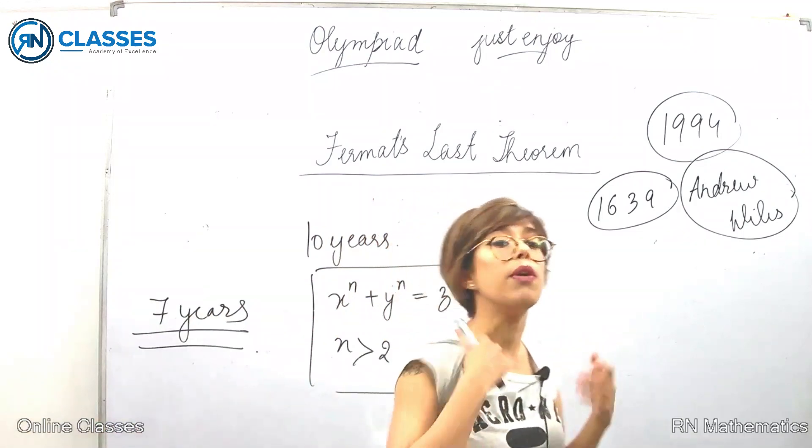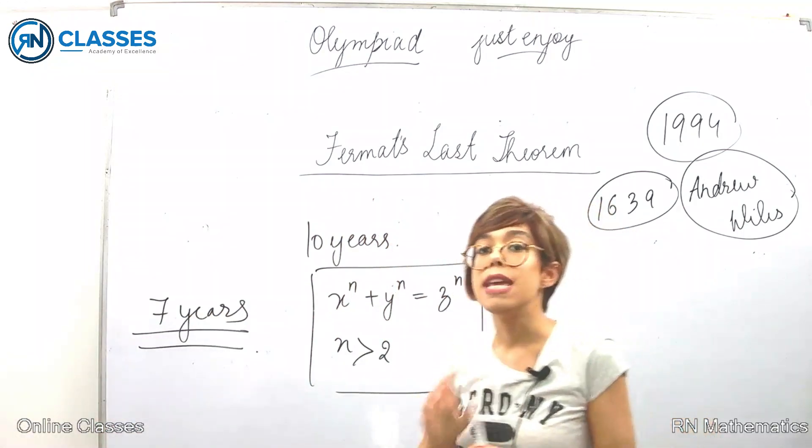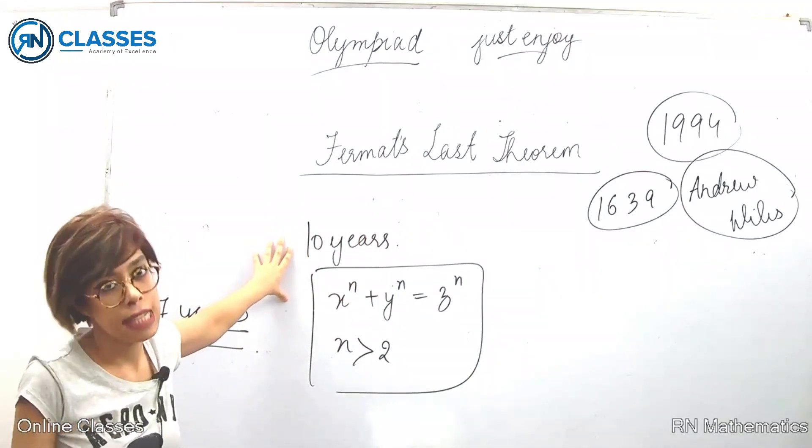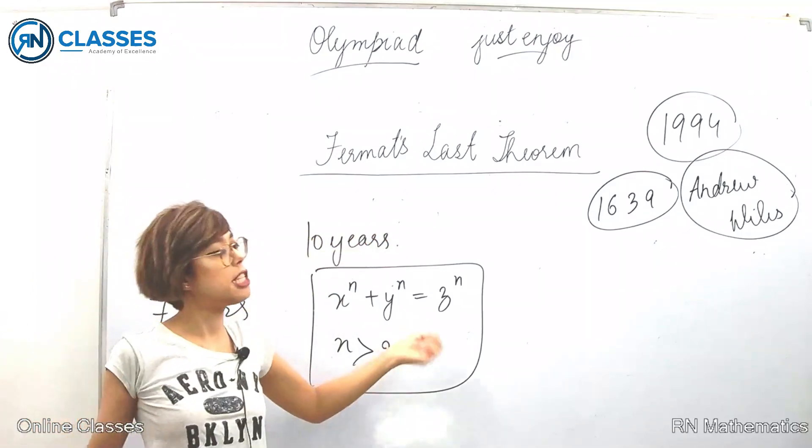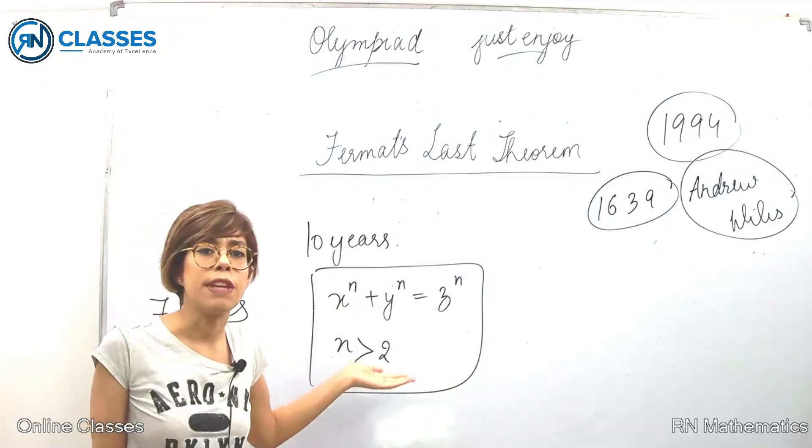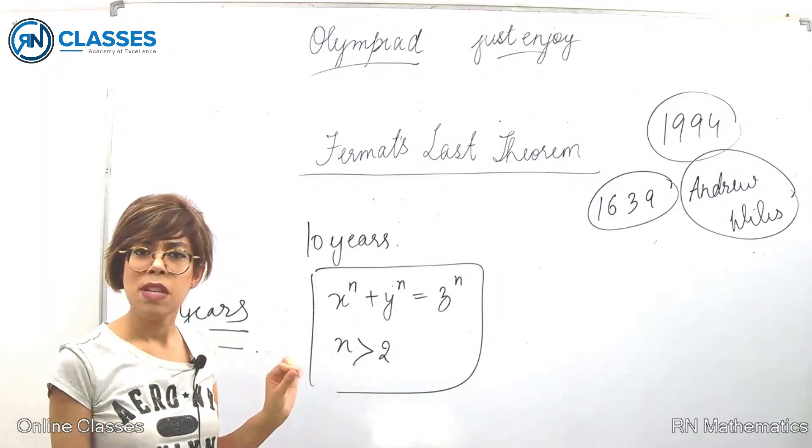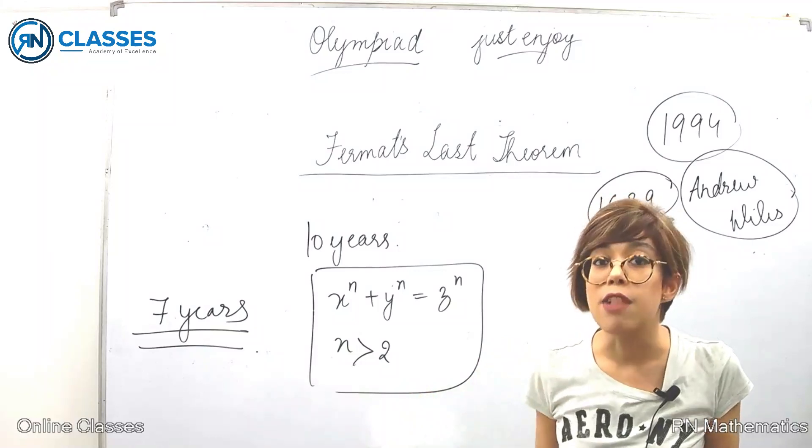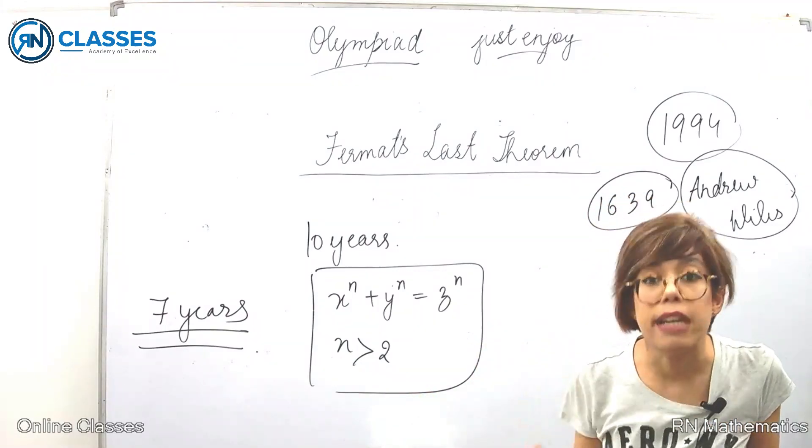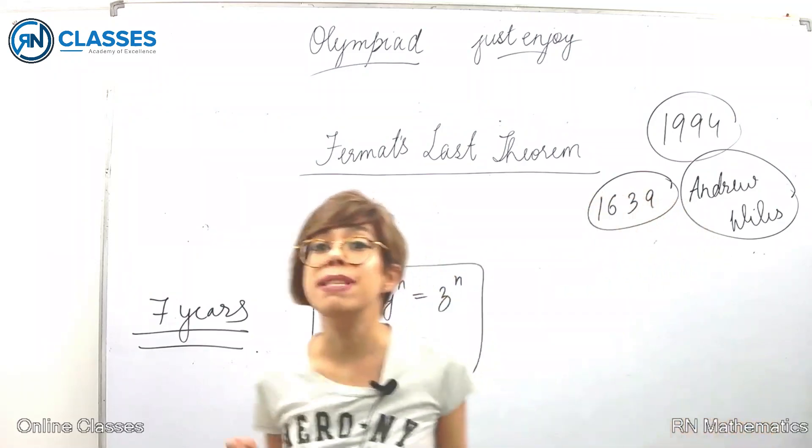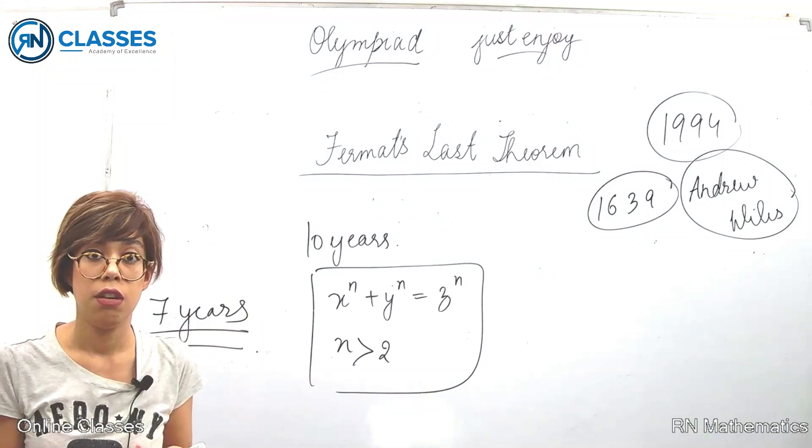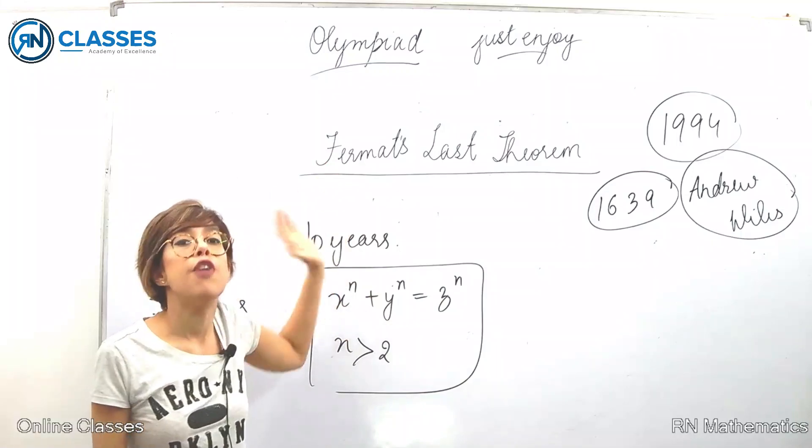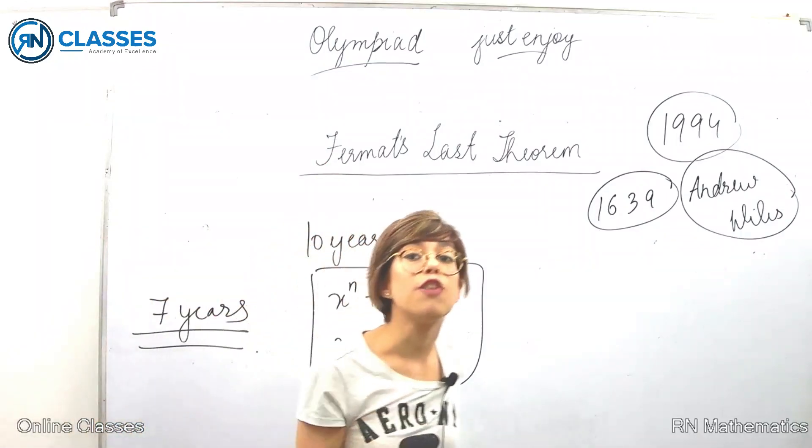The second thing is the importance of education. He was 10 years of age. Obviously, he knew he couldn't prove it then. So what he did was he went to school, went to university, did his PhD. He got himself a good education so he could equip himself with methods, techniques, and knowledge in order to tackle the problem of proving Fermat's Last Theorem. That is the importance of education.